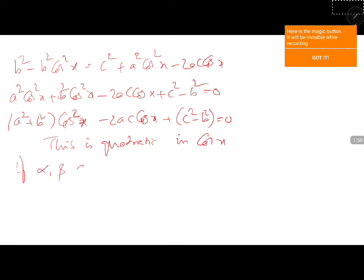If alpha and beta are solutions, they satisfy the equation. Putting alpha in place of x gives cos squared alpha and cos alpha, so alpha satisfies the equation, and beta satisfies that equation too. But this is a quadratic in cos x. Therefore, cos alpha and cos beta are the roots.